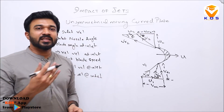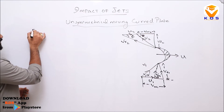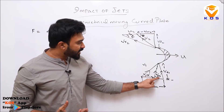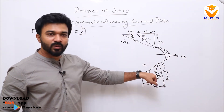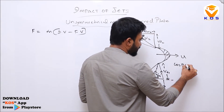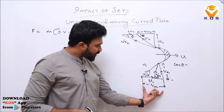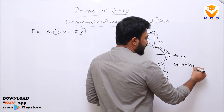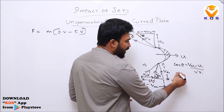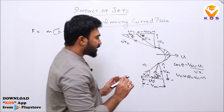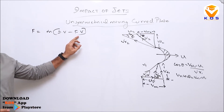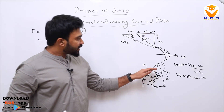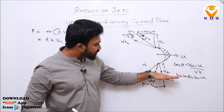Using this velocity triangle, the force exerted is F = ṁ(initial velocity − final velocity). The initial velocity component in the horizontal direction is Vr1·cosθ. From the inlet triangle geometry, cosθ = (Vw1−U1)/Vr1, so Vr1·cosθ = Vw1 − U1.